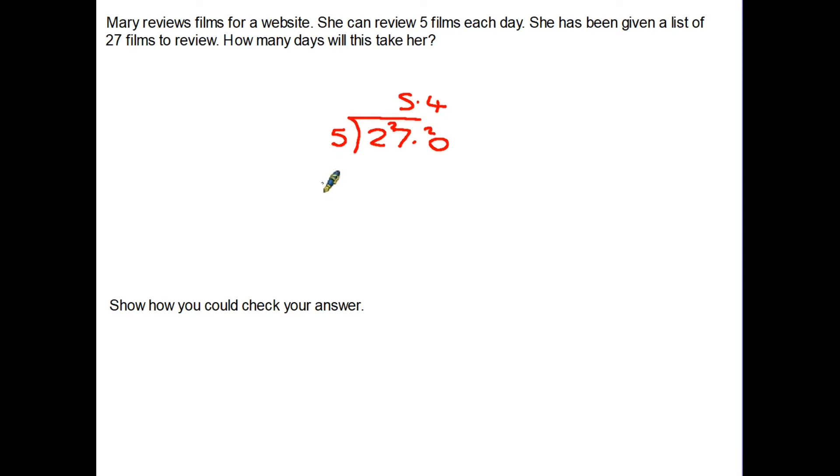The question is how many days. Five point four isn't a bad answer but in fact what is happening here, that point four is actually the sixth day. So it would take her rounded up to the nearest day, six days.